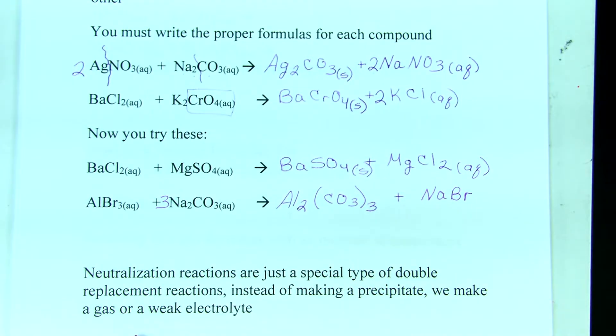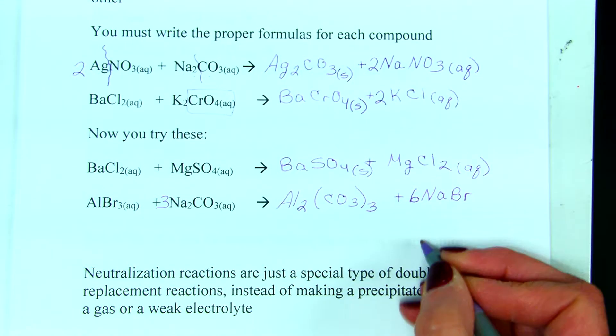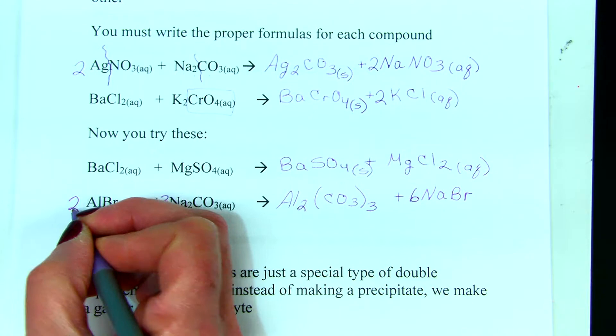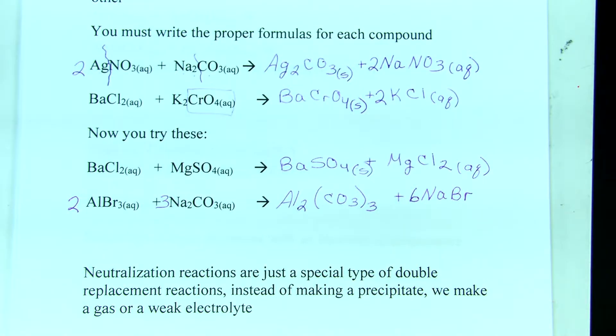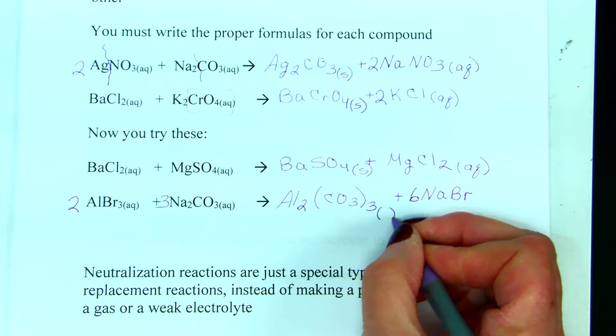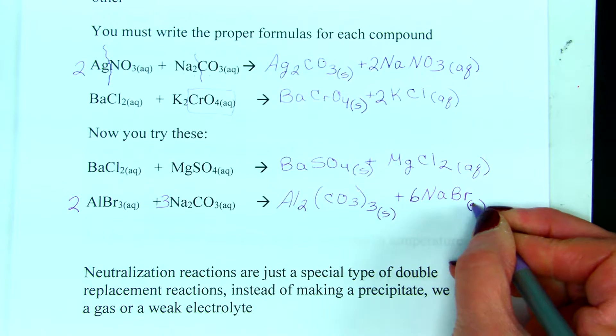Now, how many sodiums does that give me? Six. So, now, that gives me six bromides. What do I have to do to fix that? Put a two here. Okay, now we have a balanced equation. Now, what do I do about the subscripts? What goes here for aluminum carbonate? Solid and sodium bromide aqueous.